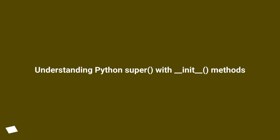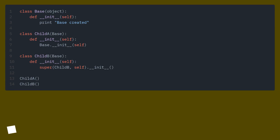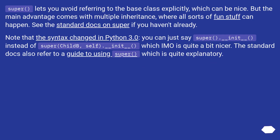Understanding Python super with `__init__` methods. Why is super used? Is there a difference between using `Base.__init__` and `super().__init__`? Super lets you avoid referring to the base class explicitly, which can be nice.